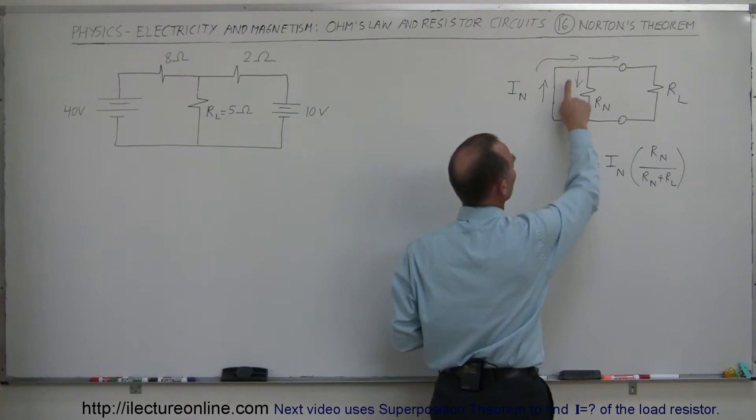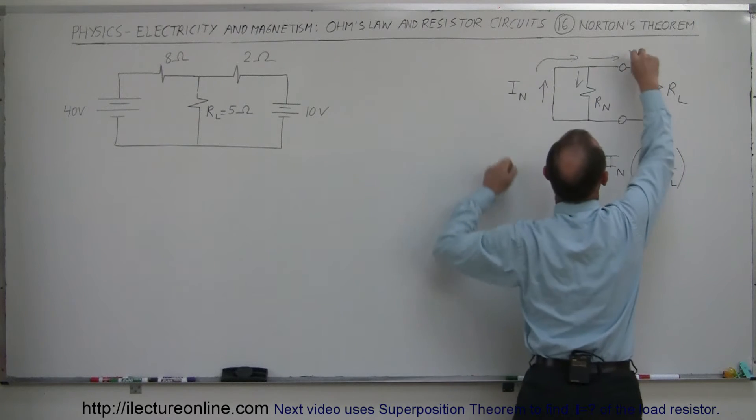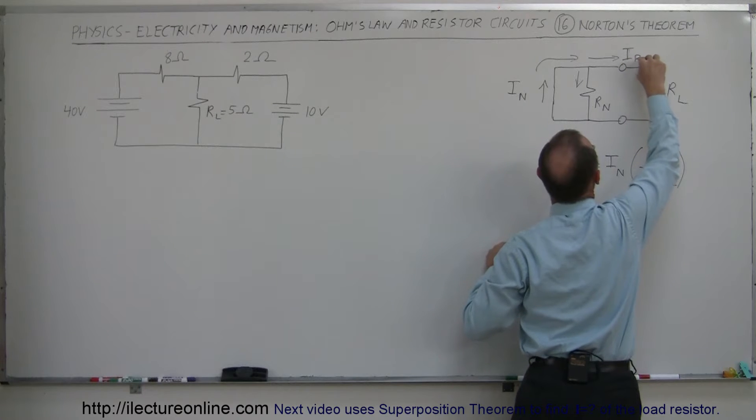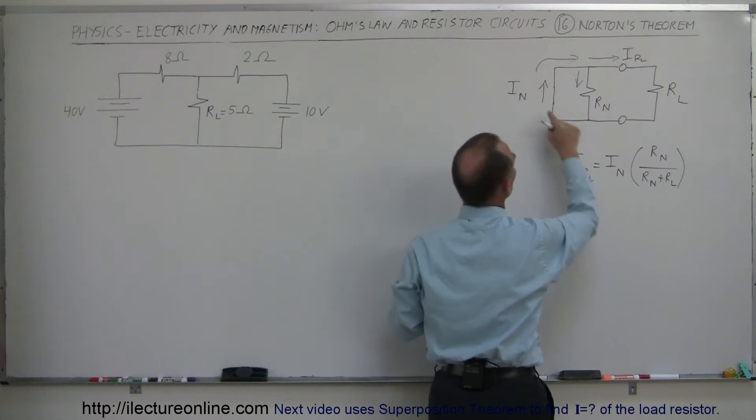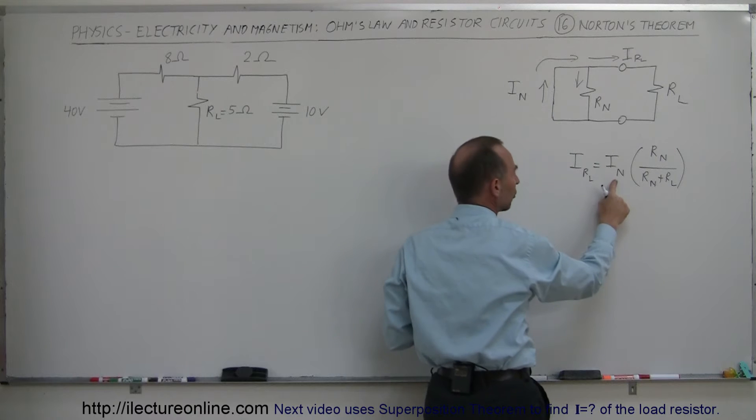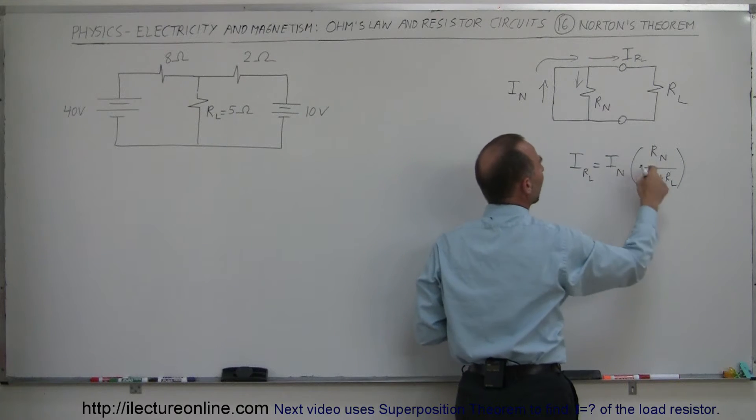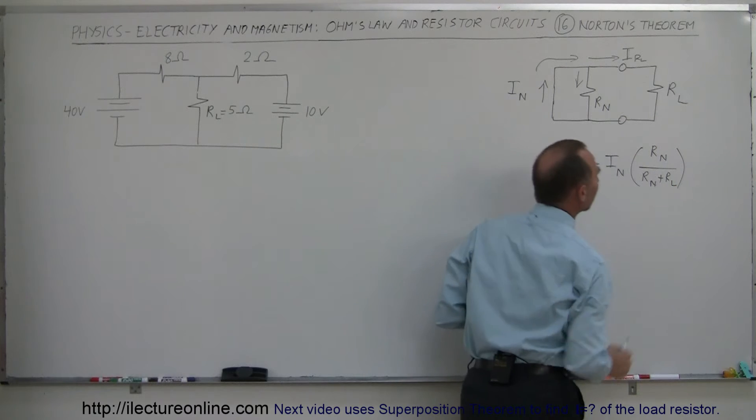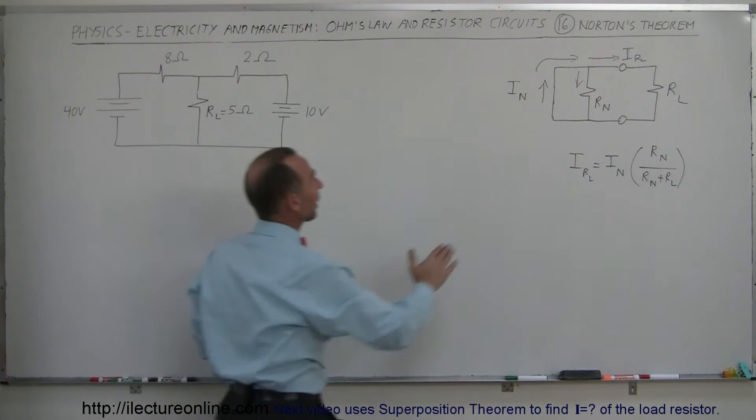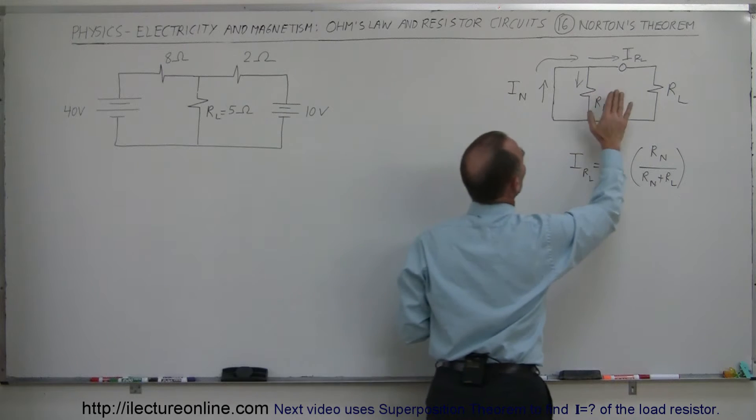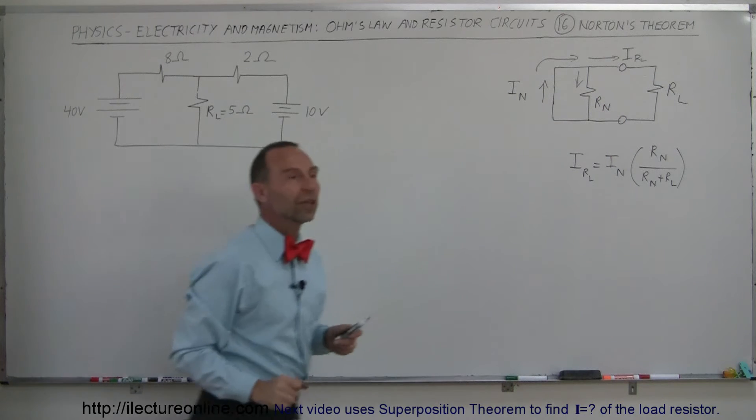To find the current in the load resistor, which is this current right here, that's going to be equal to the total current in the circuit, which is the Norton current, times the ratio of the Norton resistance divided by the total resistance of the two branches. So all we have to do is find out what that Norton current is and what that Norton resistance is.